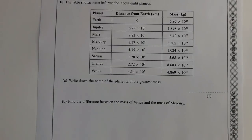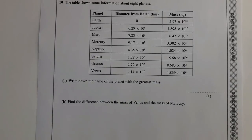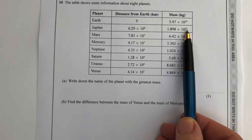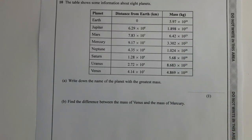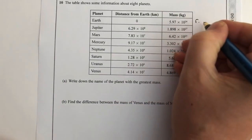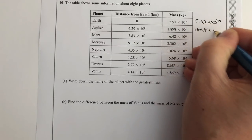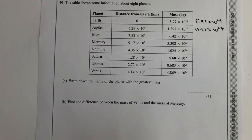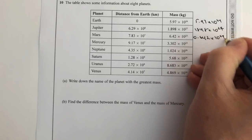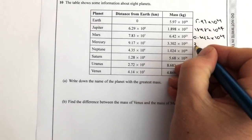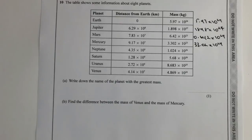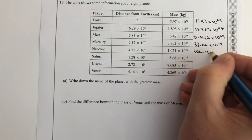Question number ten deals with standard form. They're asking you to write down the name of the planet with the greatest mass. The way to do this is to work all the masses out to exactly the same power - you can see we've got 10 to the 24, 27, 23 and so on - so it's much easier if we write them all down as 10 to the 24. All you're really doing is moving around the decimal points and writing out each of the answers.